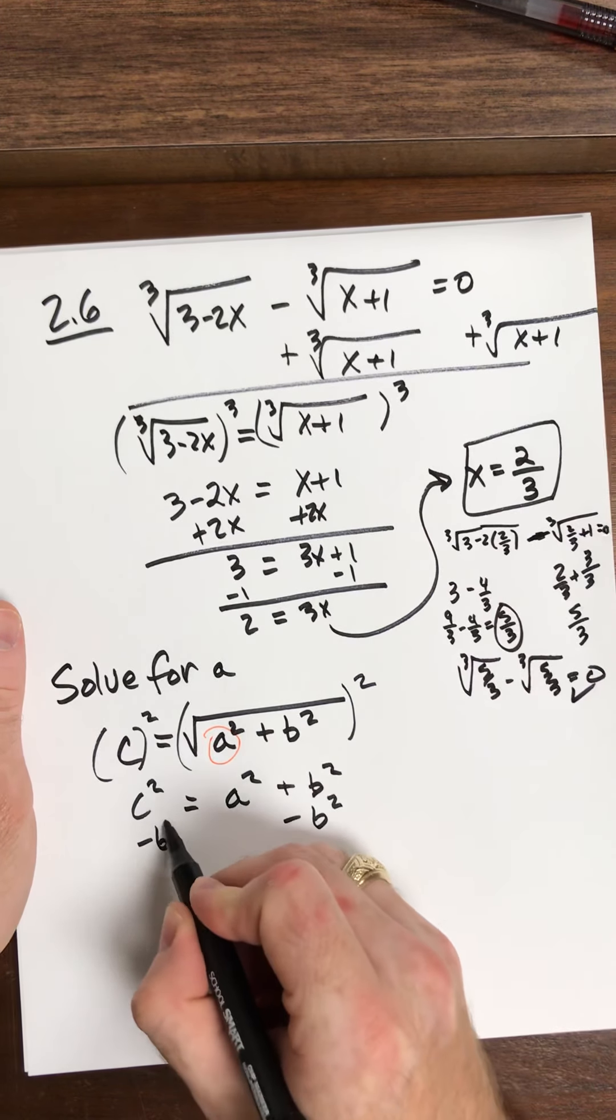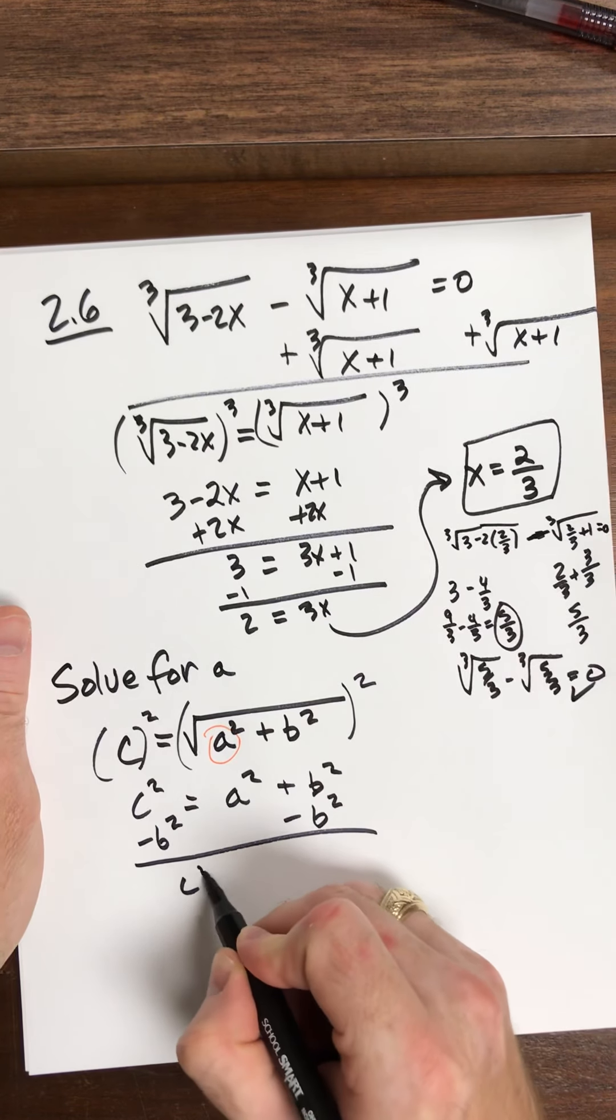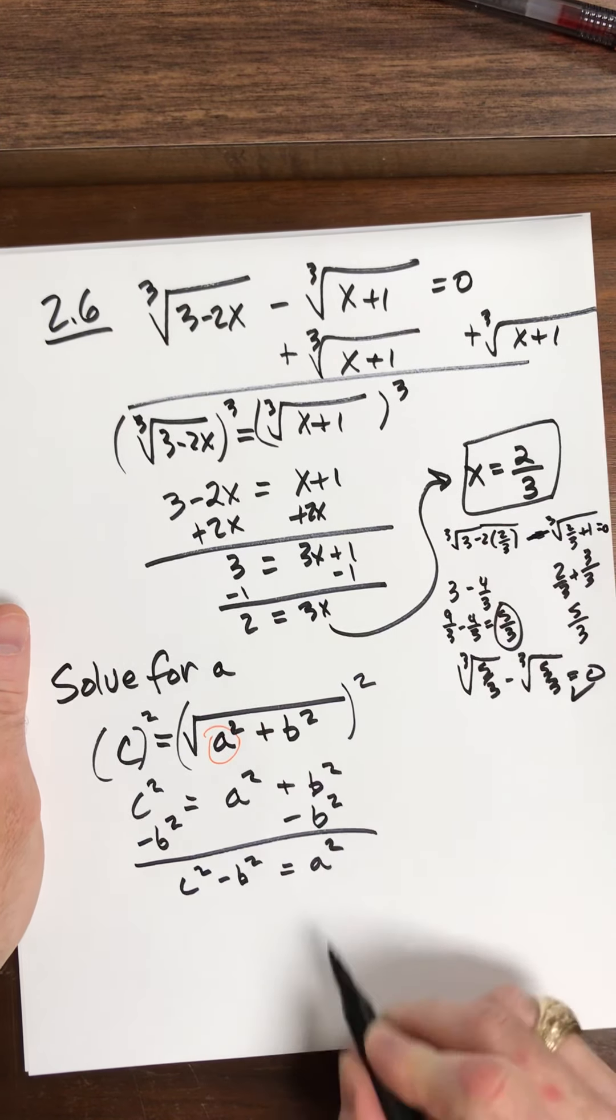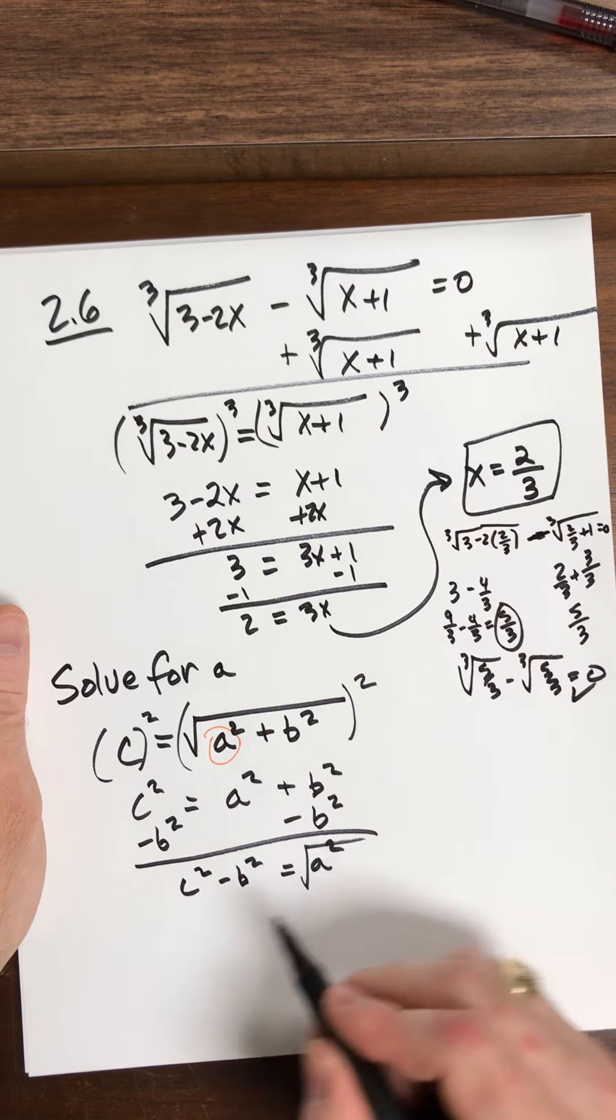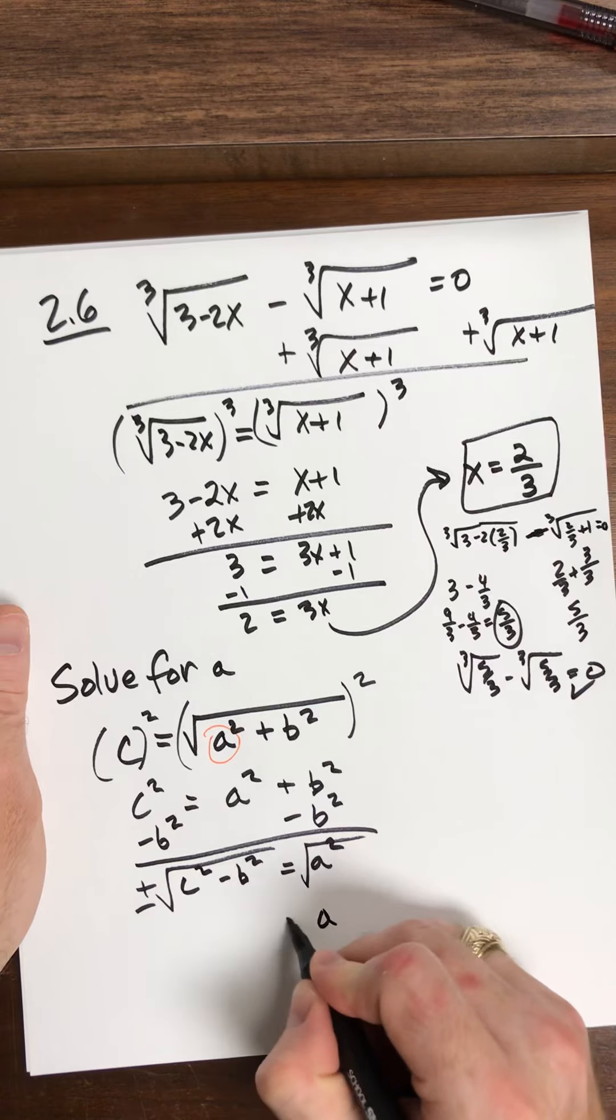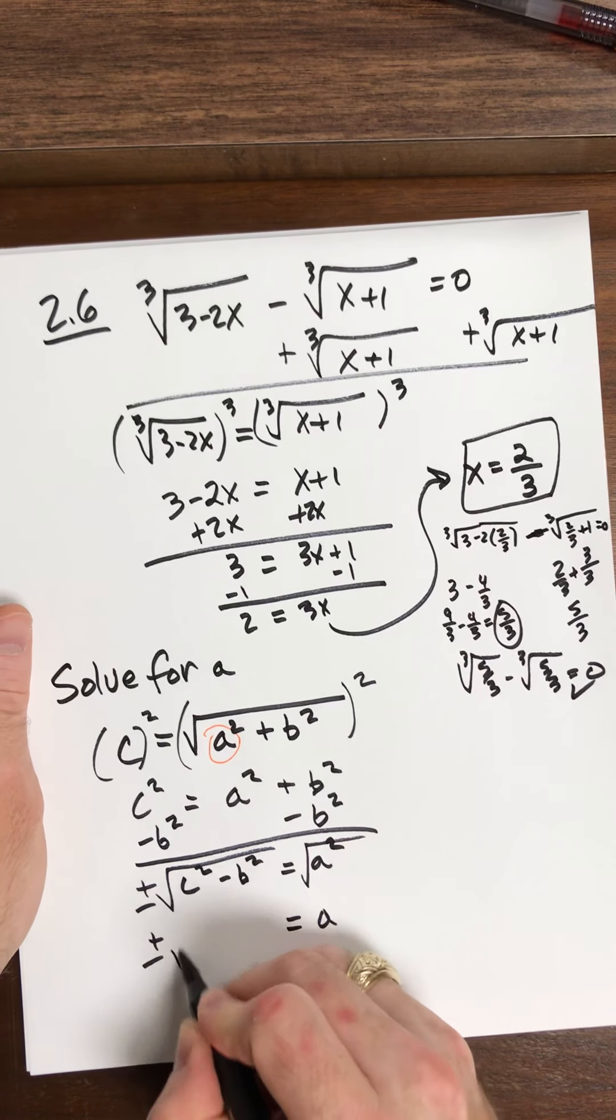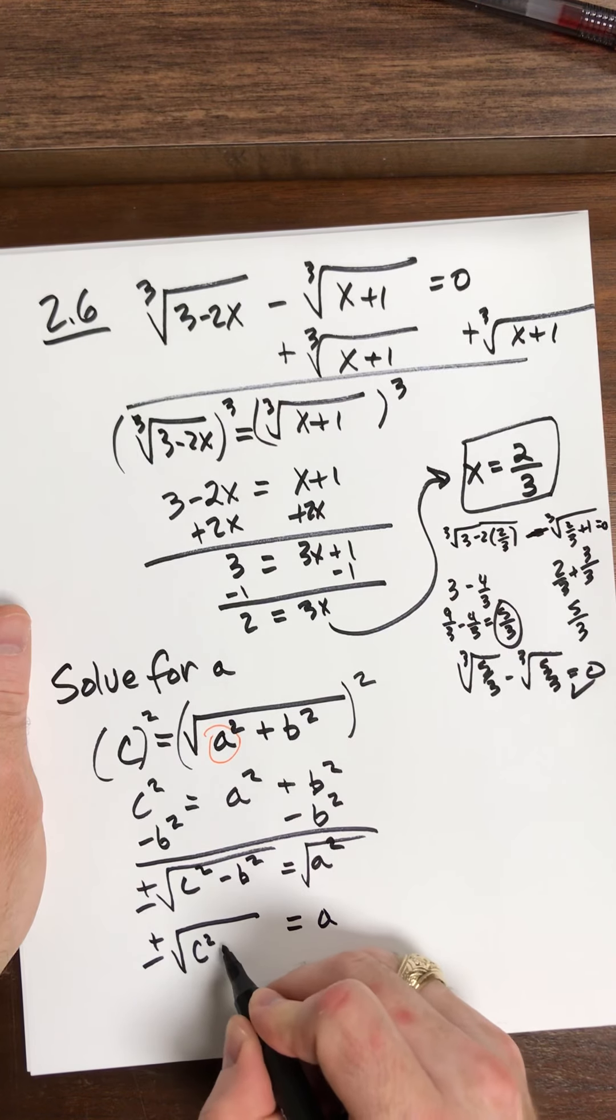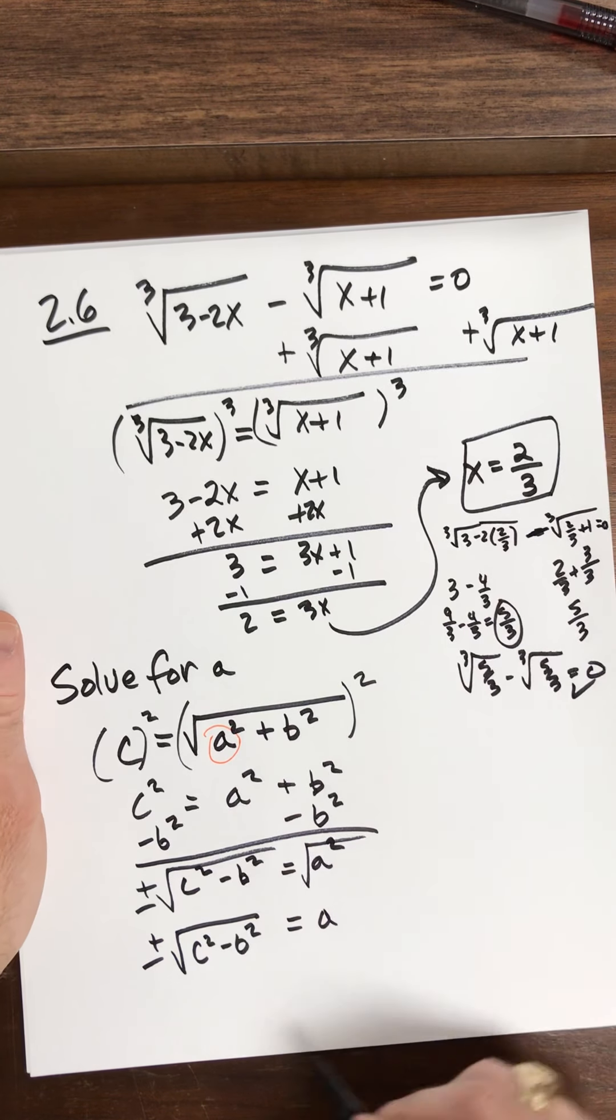So minus B squared minus B squared. So I have C squared minus B squared equals A squared. To get A by itself, I square root both sides. When I square root, I have a plus or a minus. And so this is equal to A. So A is plus or minus square root of C squared minus B squared.